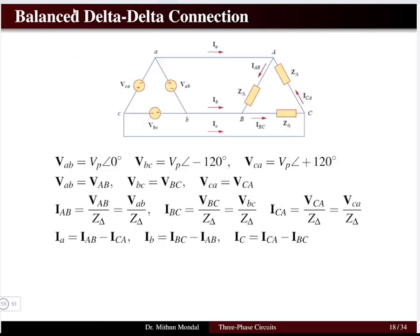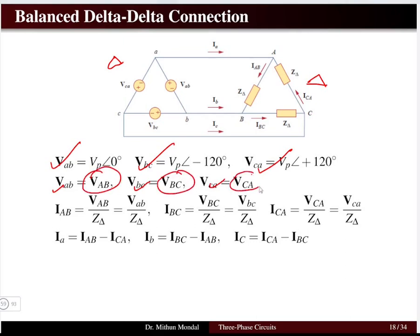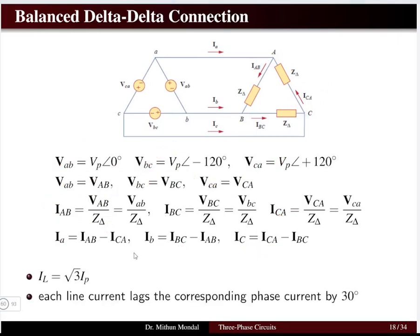The third system is the delta-delta connected system — source is delta-connected, load is delta-connected, and the system is balanced. In the ABC phase sequence, we write V_AB, V_BC, and V_CA. The phase voltage equals the line voltage. The phase currents I_AB, I_BC, and I_CA are each obtained as the corresponding line voltage divided by the delta impedance. KCL is then applied at the three nodes to find the line currents I_A, I_B, and I_C.